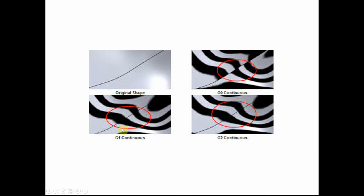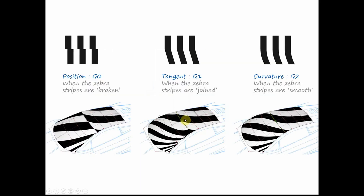When you have G1, the lines of the zebra stripe are lining up — but that's G1 or tangent continuity. And with G2, you get a smoother blend and reflections. I'll show you how to do some of this in CATIA later.